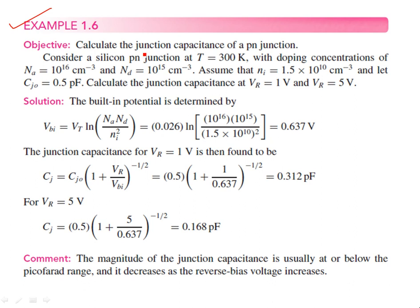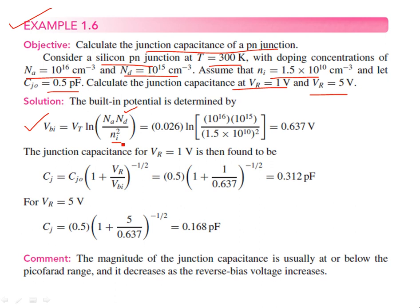This example shows the calculation of junction capacitance for a typical PN junction. We are considering silicon at room temperature, with given doping concentrations of acceptor and donor. Assuming thermal equilibrium conditions, let the junction capacitance be 0.5 picofarads without any bias. The first step is to find the barrier potential in terms of the donor concentrations, using equilibrium concentration values from example 1.1 and thermal voltage VT of 26 millivolts. Plugging in those values, the barrier potential is about 0.637 volts.